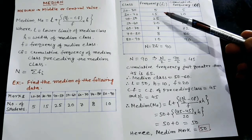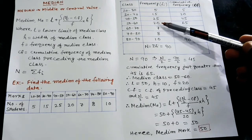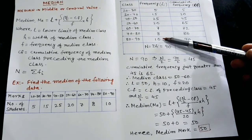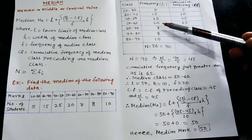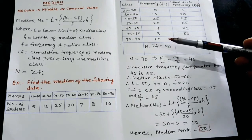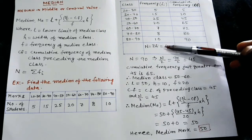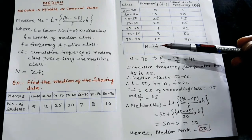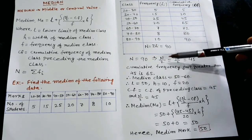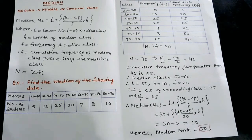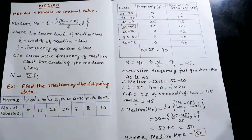5 + 15 + 25 + 20 + 7 + 8 + 10 — adding all frequencies gives us 90. This is denoted as sigma fi, and for median purposes we call it N. So N = 90, and N/2 = 90/2 = 45.